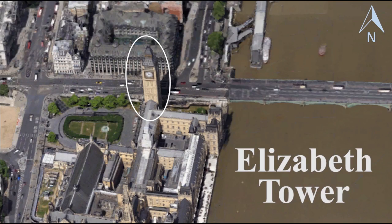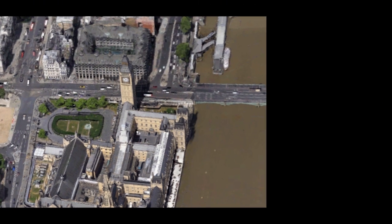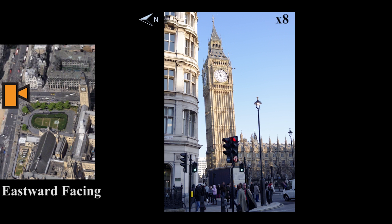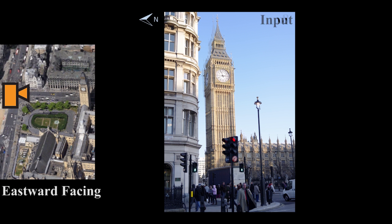London's famous Elizabeth Tower, or Big Ben, is known to be tilting slightly to the northwest. We take an image of the tower with an eastward-facing camera and use off-the-shelf algorithms to fit a vanishing point to the vertical lines. Then we amplify the deviations from vertical by 8 times, revealing the tower's tilt to the north — in this case, to the left.